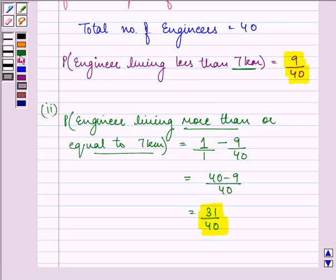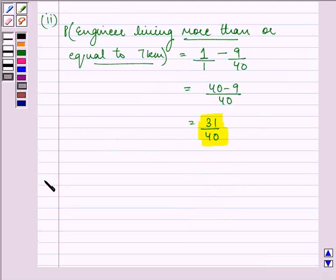Finally, the third part. In the third part, we are required to find out the probability that the engineer is living within half km from her place of work.